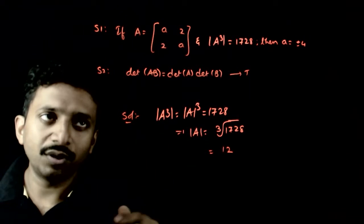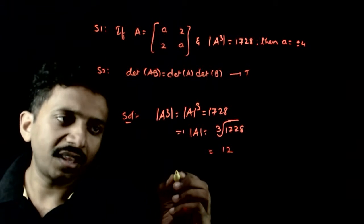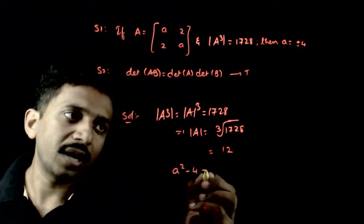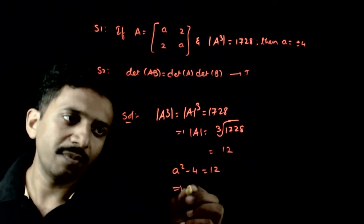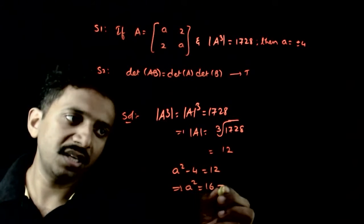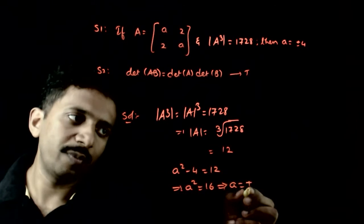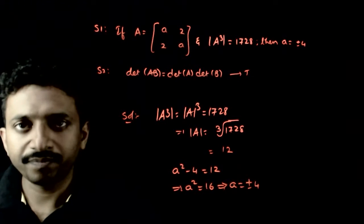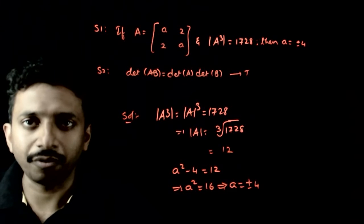So det(A) has to equal 12. But det(A) is A² - 4, so A² - 4 = 12. This implies A² = 16, which means A = ±4.